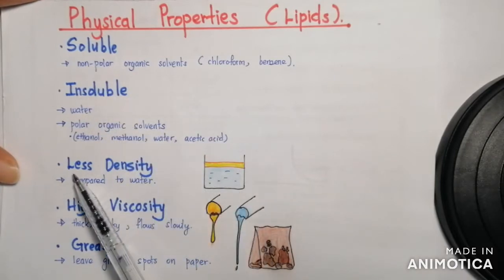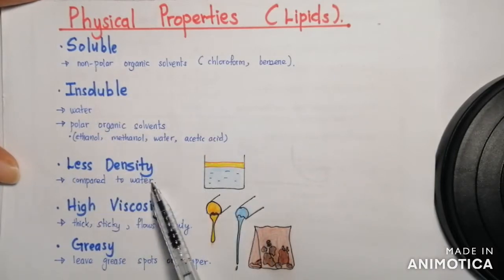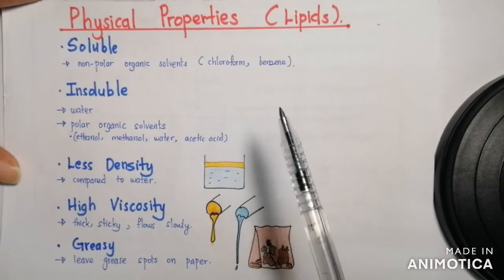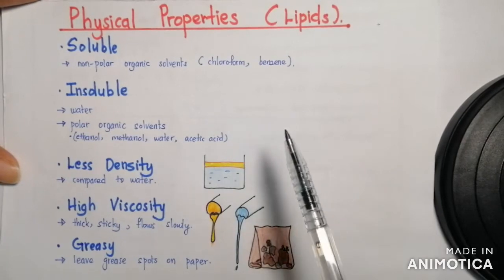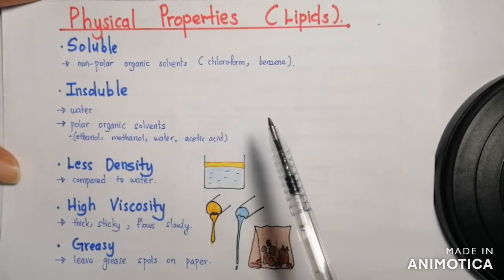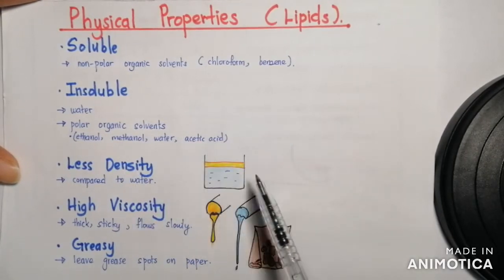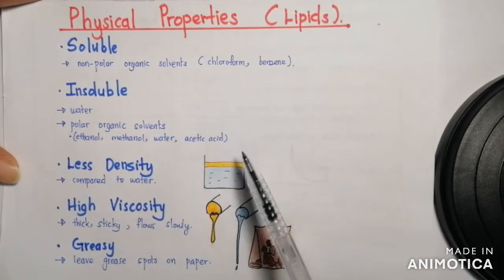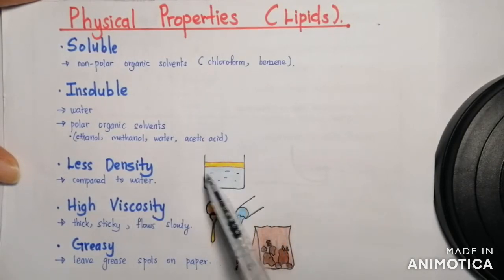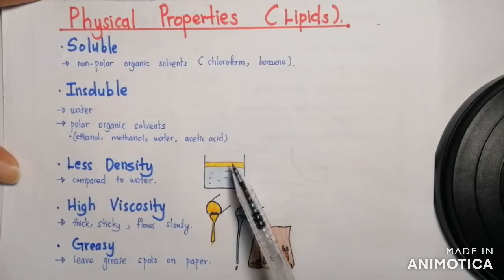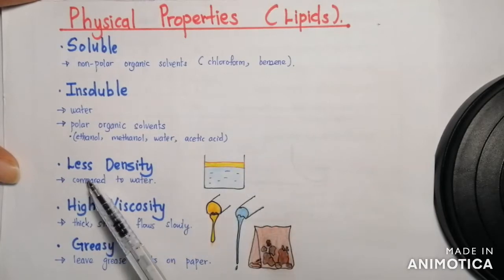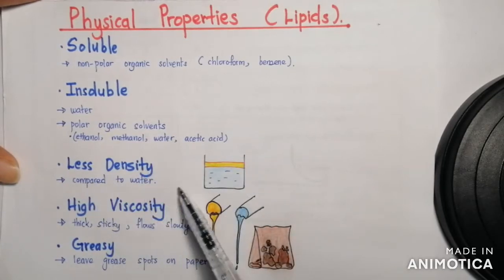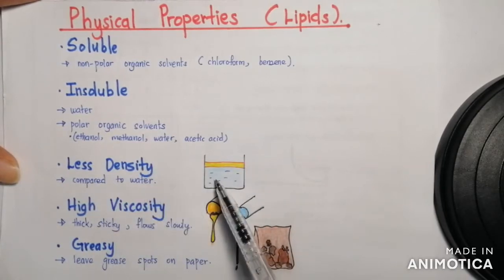Lipids also have less density compared to water. So for example, if you take vegetable oil and pour it into a beaker of water, you will see that the oil floats on the water because the density of lipids is less than the density of water.